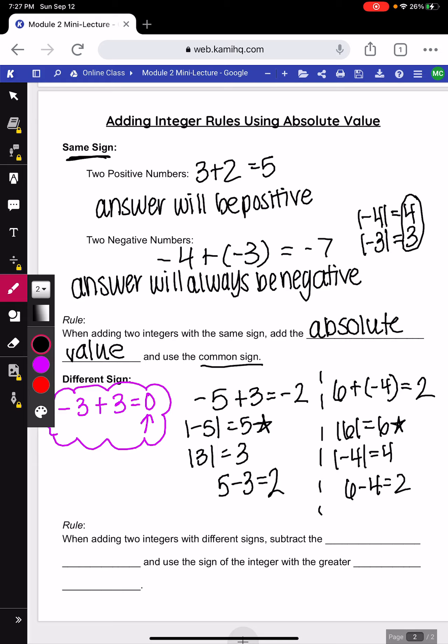So, our rule for adding two integers with different signs, we subtract the absolute value and you use the sign of the integer with the greater absolute value. Alright, so there was how to add integers with our manipulatives and some rules that should help you out with your activity this week.